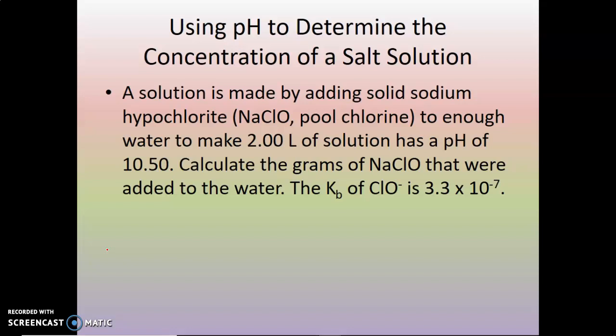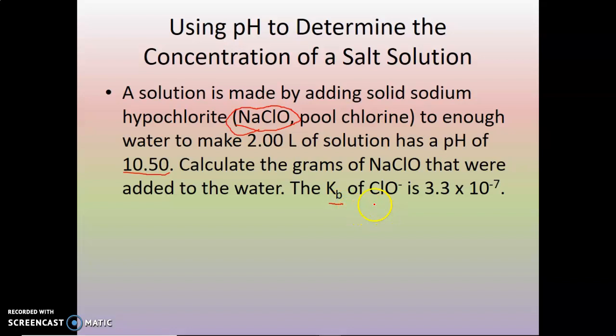If you have a salt, it can be either an acid or a base, so you'd need to look at what your salt is composed of. Here we have pool chlorine — sodium hypochlorite — and we're trying to figure out how many grams were added to get a pH of 10.5. This is clearly a base, and it is the conjugate base of hypochlorous acid. The Kb value given is 3.3 times 10 to the minus 7.